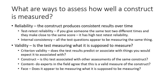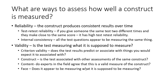Construct validity asks whether the test is associated with other assessments of the same construct. If I made an IQ test, I'd check whether scores on my test are consistent with scores on other established IQ tests. Content validity asks whether experts in the field agree that the test measures what it claims — whether that's intelligence, depression, or another construct. If experts don't agree that the test measures the construct, it may not be valid.